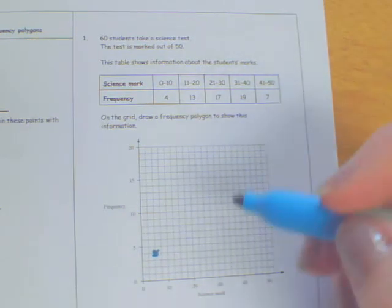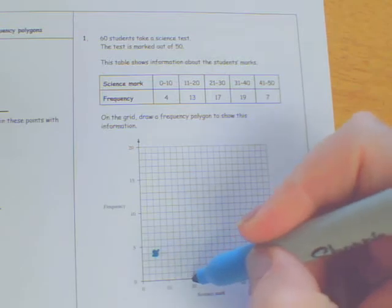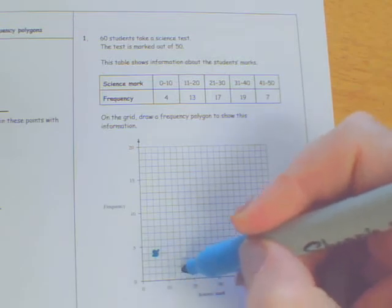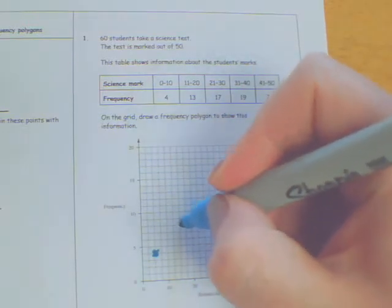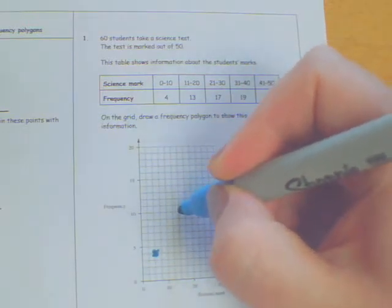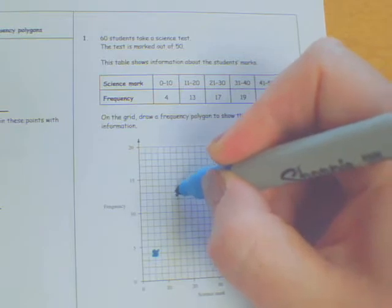I'm going to do that for every single bar. So 10 to 20, I want to go halfway and go all the way up to 13. 10, 11, 12, 13.